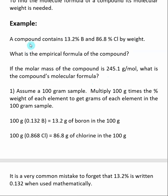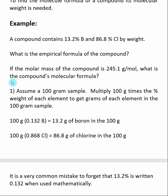Here's an example. We find that a compound is 13.2% boron and 86.8% chlorine by weight, and we want to determine the empirical formula. Then if we are given that the molar mass of the compound is 245.1 grams per mole, we want to be able to determine the compound's molecular formula.